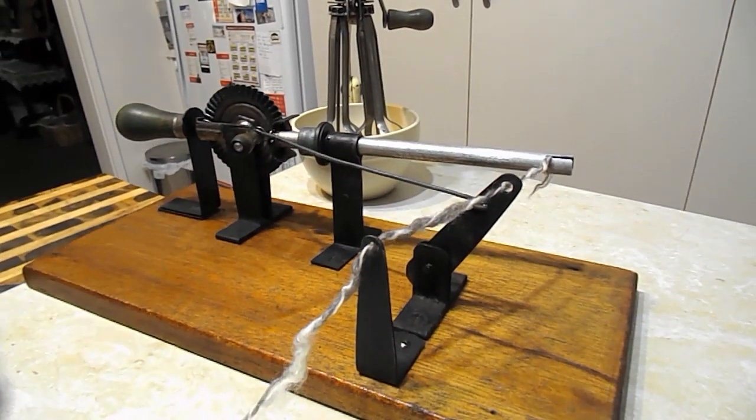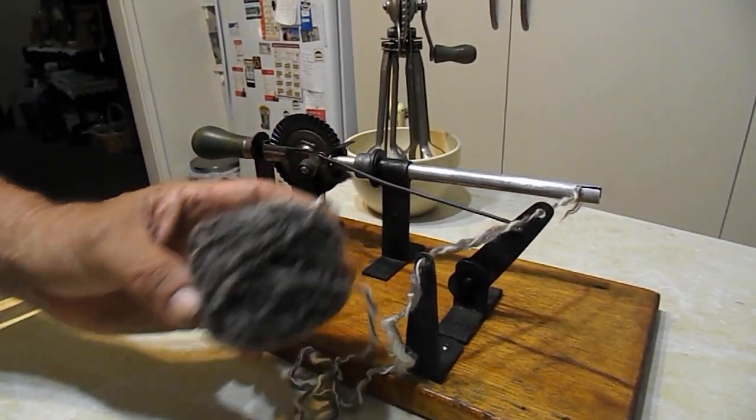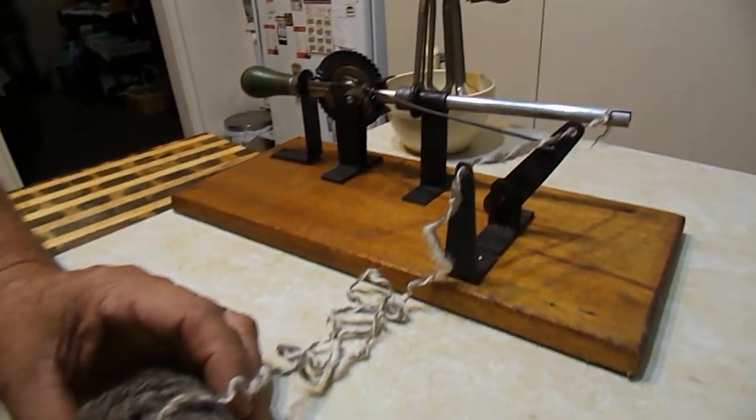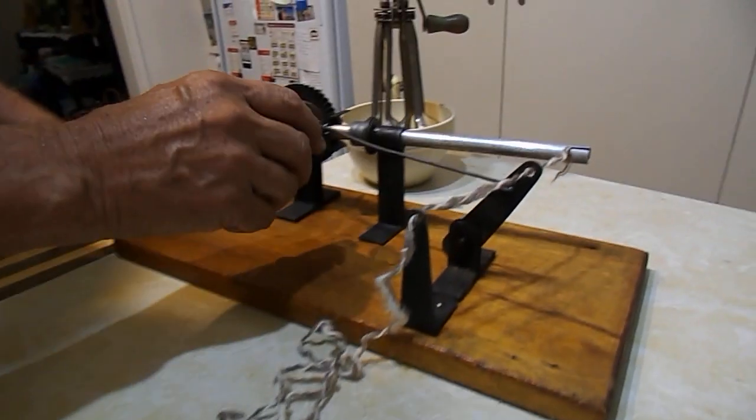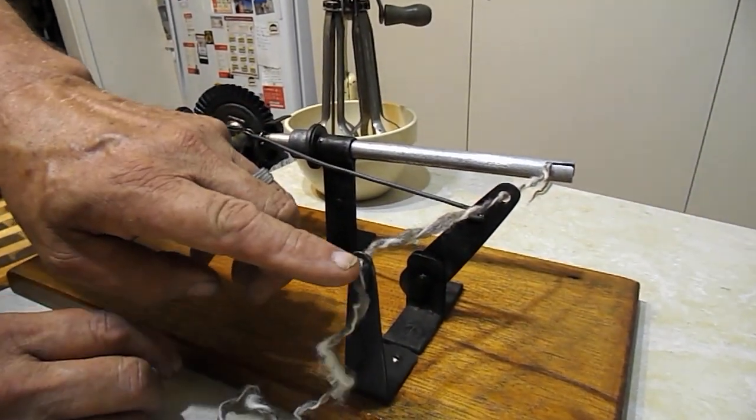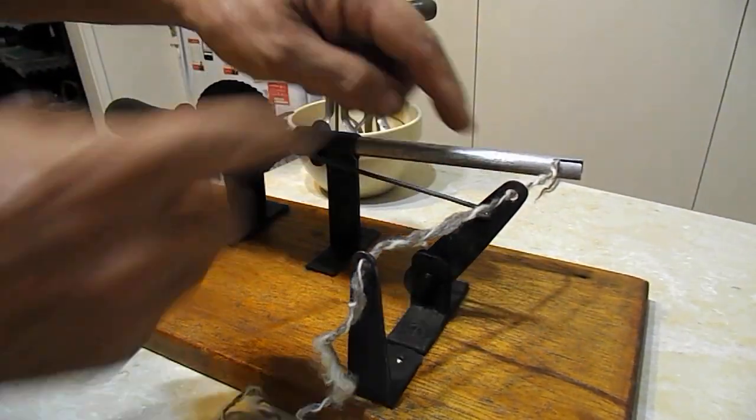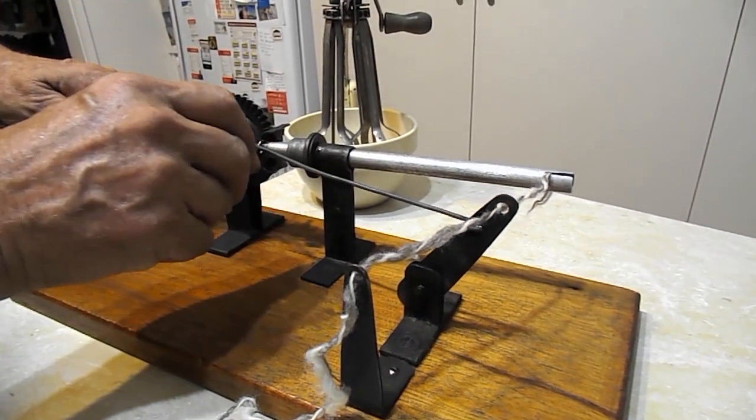So as you turn this around, you can see we've got one of my spun fleece balls there. It goes through that eye onto this arm which goes backwards and forwards.